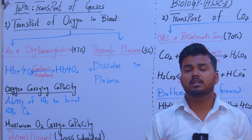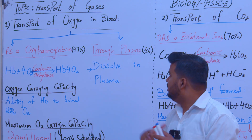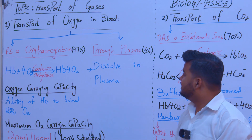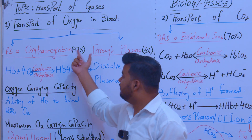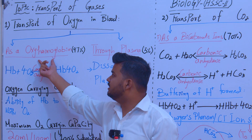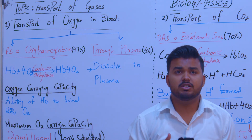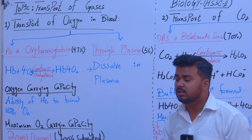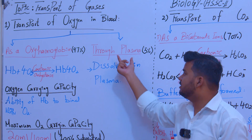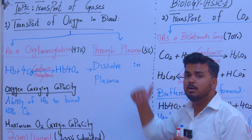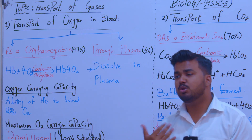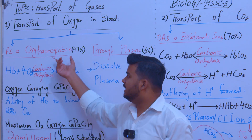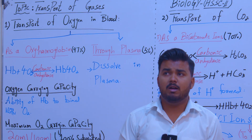The first method is as oxyhemoglobin and the second is through plasma. If you have learned blood composition, blood has a liquid portion which is plasma and the second component is blood cells. The maximum oxygen — 97% — travels as oxyhemoglobin, and only 3% oxygen transfers dissolved in plasma.